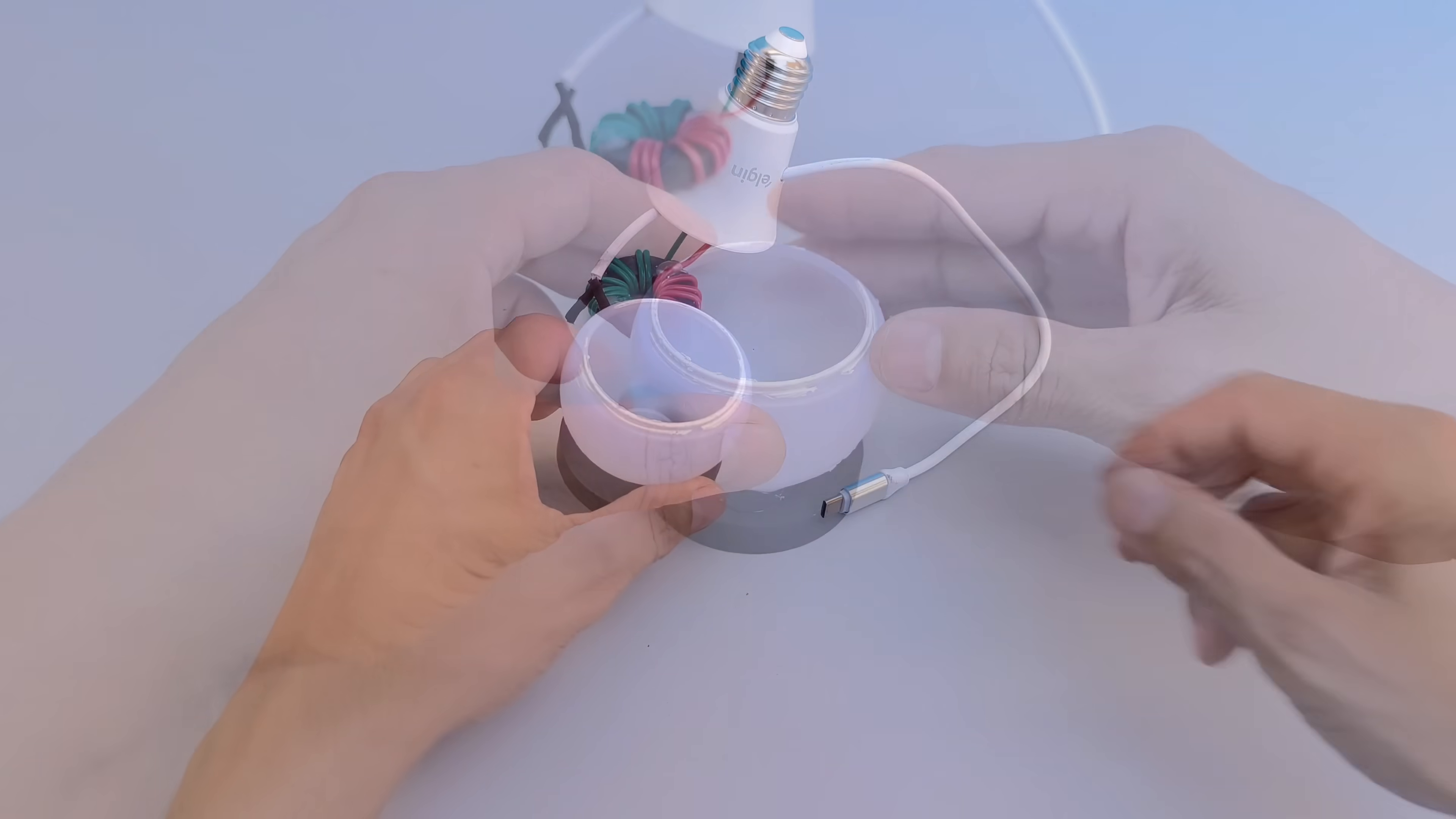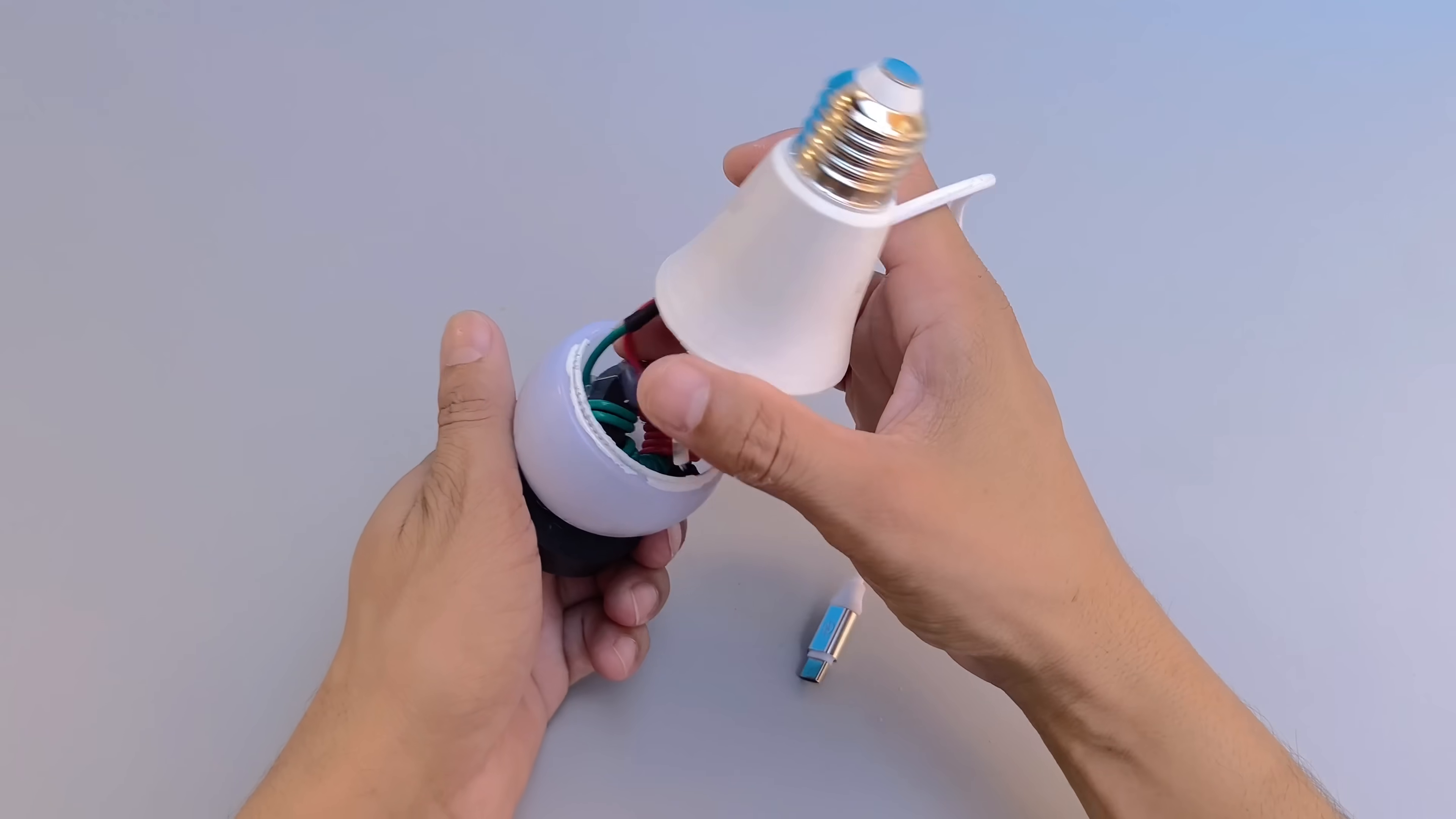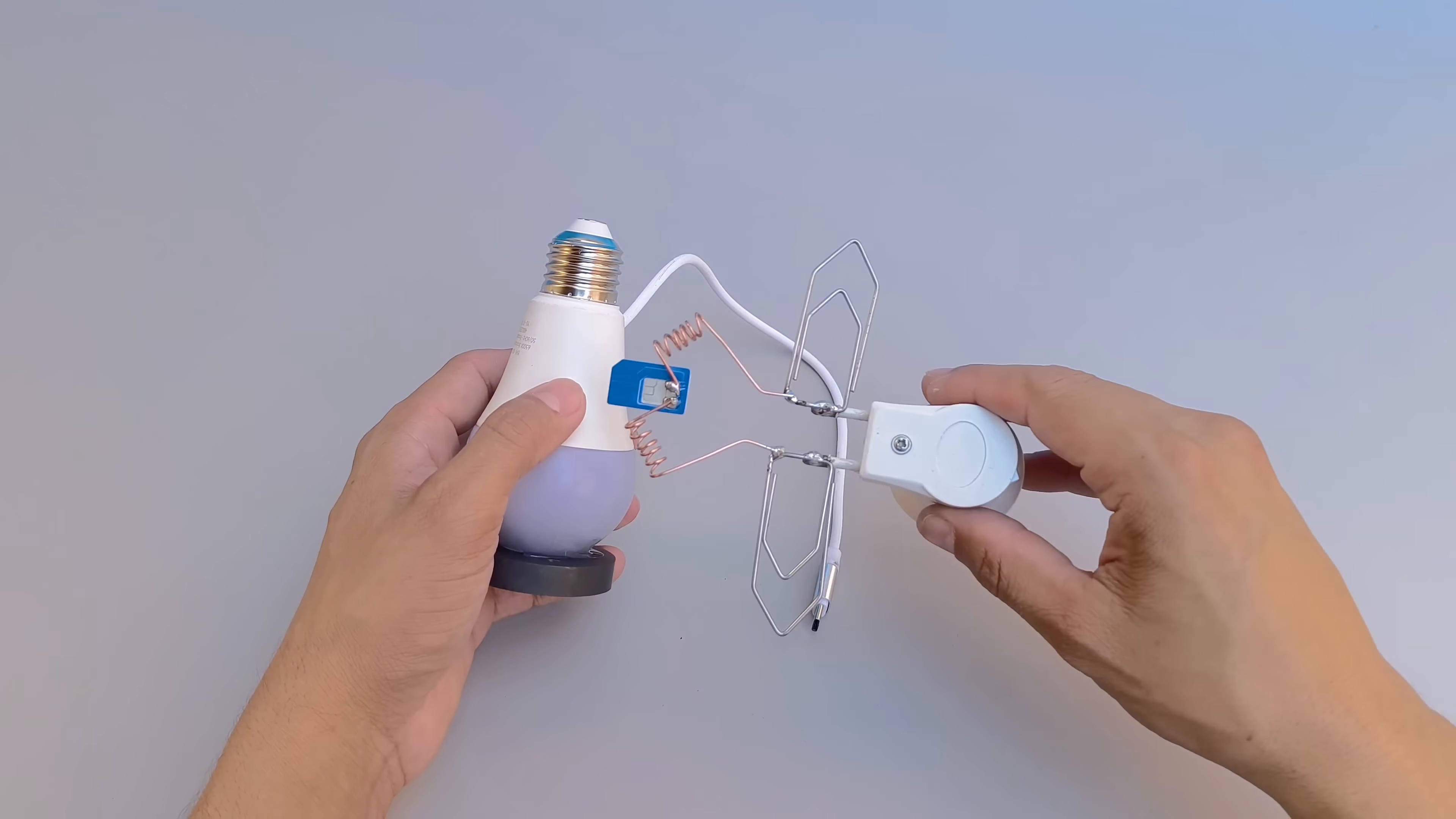With the magnet firmly attached, the next step is to prepare the electromagnet. All the wires are now connected, ready to conduct energy and enable the device to operate. The electromagnet is carefully inserted into the bulb.